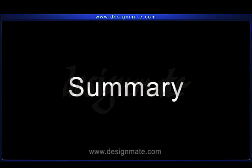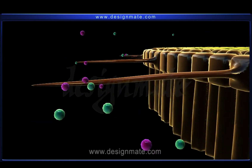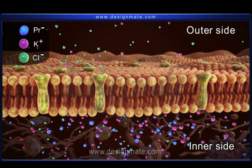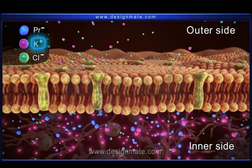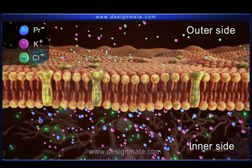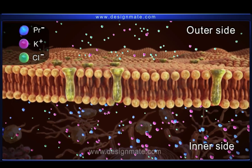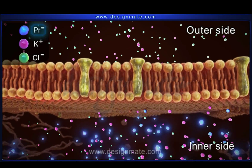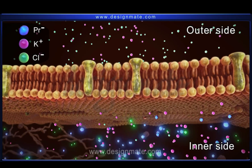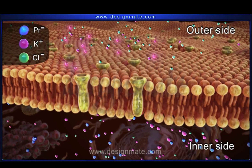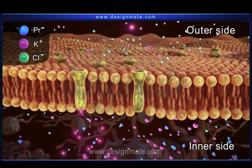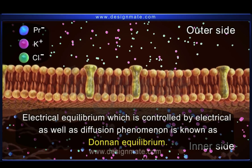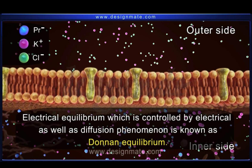Summary: The cell membrane of a root hair cell acts as the semi-permeable membrane. The inner side has fixed non-diffusable ions PR- and K+ as cations, as well as chloride ions Cl-. The outer side has K+ and Cl- ions. The presence of both negatively charged PR- and Cl- on the inner side makes it negative relative to the outside. To establish equilibrium, equal numbers of K+ and Cl- ions move across the membrane. This electrical equilibrium, controlled by both electrical and diffusion phenomena, is known as Donnan equilibrium.